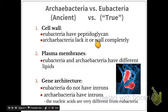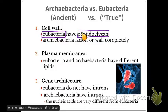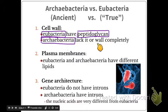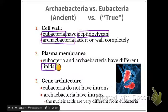Cell wall differences, plasma membrane differences, and gene architecture differences help distinguish archaeobacteria from eubacteria. Eubacteria have a layer called peptidoglycan — simply an outer layer of the cell wall — and eubacteria have it, while archaeobacteria do not. For the plasma membrane, eubacteria and archaeobacteria have different lipids embedded in their membranes, which helped scientists determine they belong in different domains.